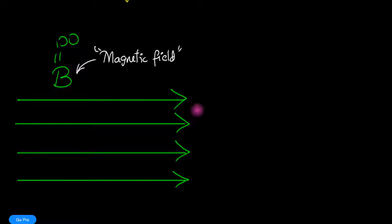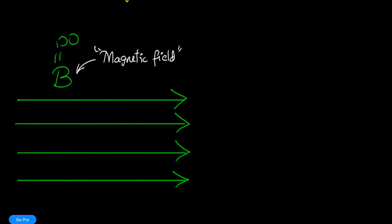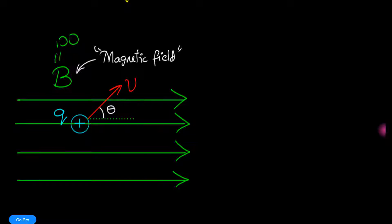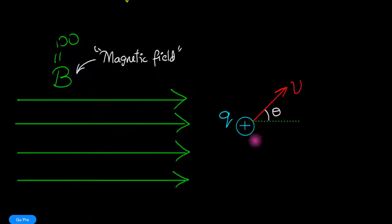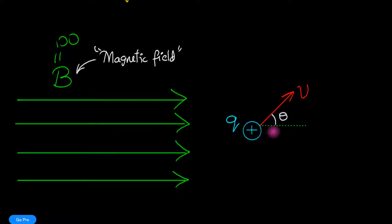What Lorentz does is try to figure out how a magnetic field affects a charge. So we put a charge in the field — here's our positive charge, plus q, moving with some velocity v.